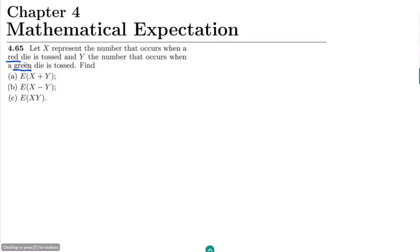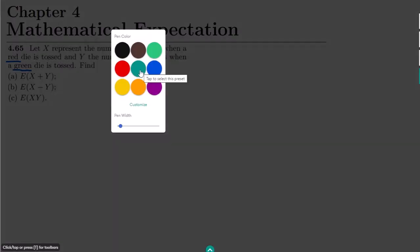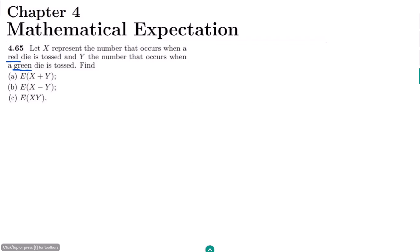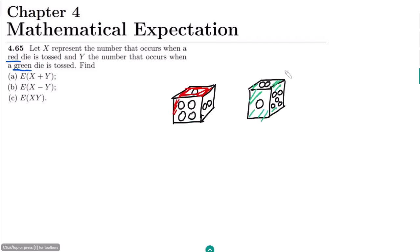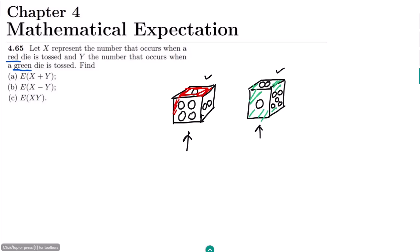So here we have two dice — one is red and the other one is green. Let me draw them here. This is the red one while this one is the green one. I have represented them with different colors. When each die is tossed, the number of dots shown on one will be independent of the number of dots shown on the other. So X represents the number that occurs when the red die is tossed, and Y for the green one.